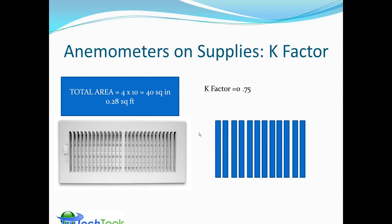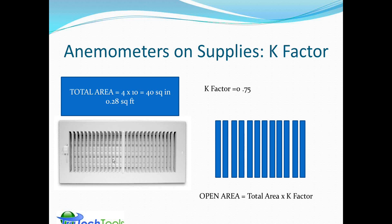If you're scanning across a grill with an air velocity meter, you'll only pick up airflow in the open areas — perhaps only 75% of the area is open. To calculate the effective open area, take the total area and multiply by the K factor. K factors can often be found in the manufacturer's data sheets for grills, and most grills run around 0.75, with some as low as 0.5 and as high as 0.80.